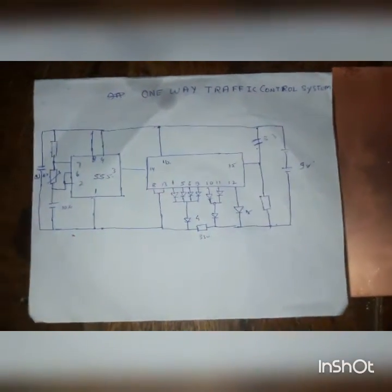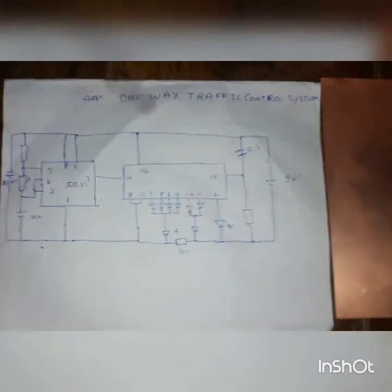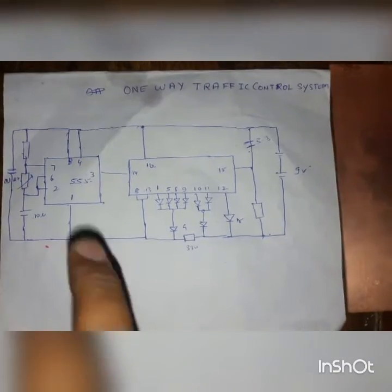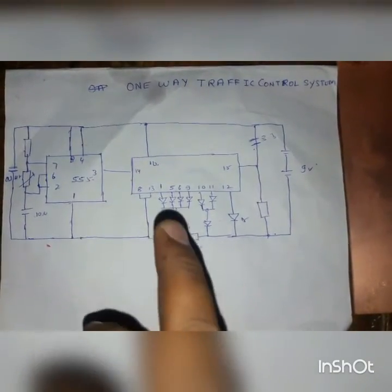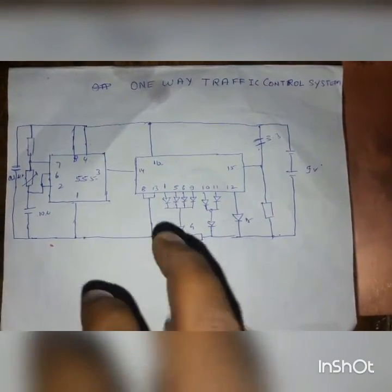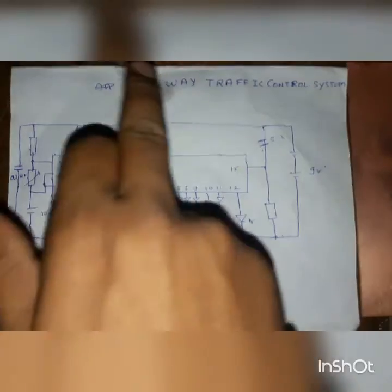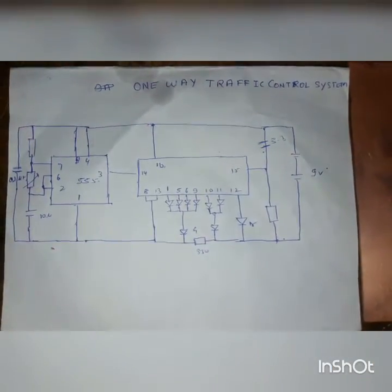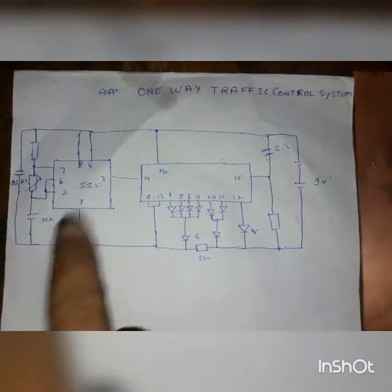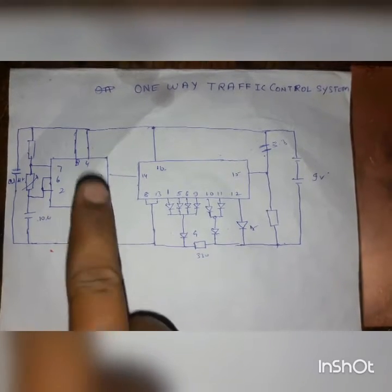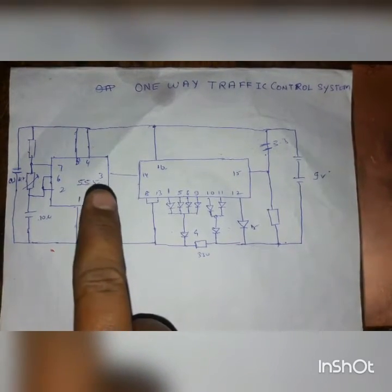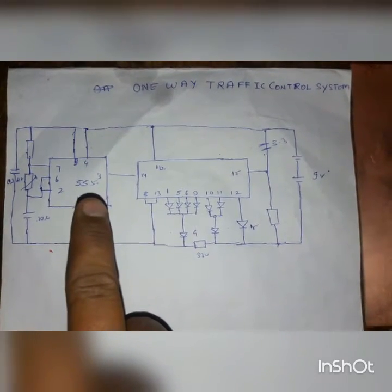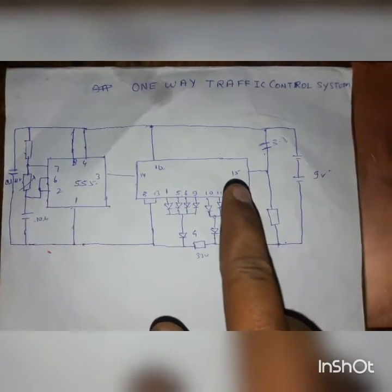Hello friends, this is the circuit of a one-bit traffic control system. This is the block diagram of the one-bit traffic control system. In this we have used two ICs. The first is the 555 timer, which is a monostable multivibrator used to generate square wave pulses.